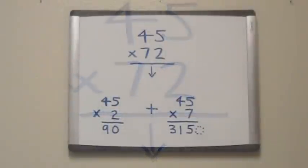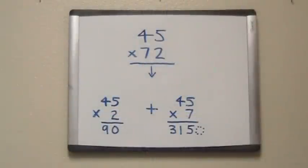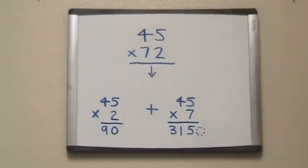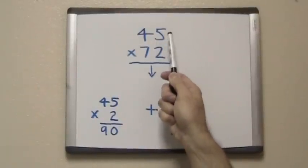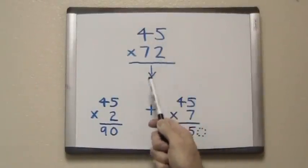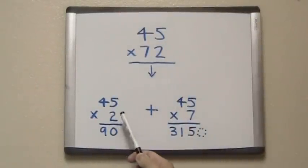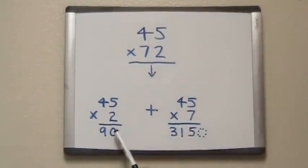With this information, we can now set up two separate problems. First, we take the 45 and multiply it by 2 to get 90.